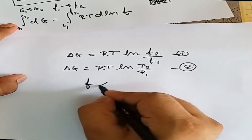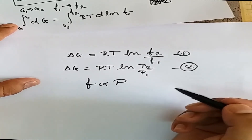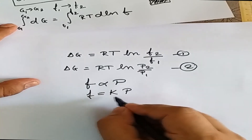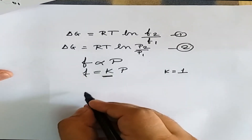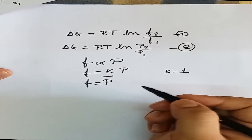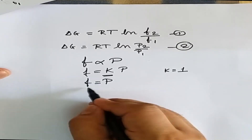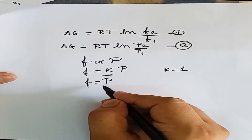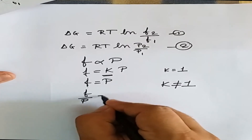Comparing both equations, we can write that fugacity is proportional to pressure. We can write f = kP, where k is the proportionality constant. If k = 1, then fugacity equals pressure, meaning the real gas starts behaving as an ideal gas. But for a real system, k is not equal to 1, so f/P is not equal to unity.